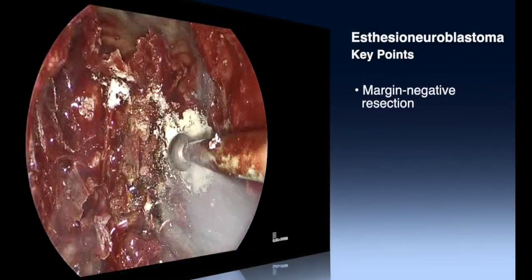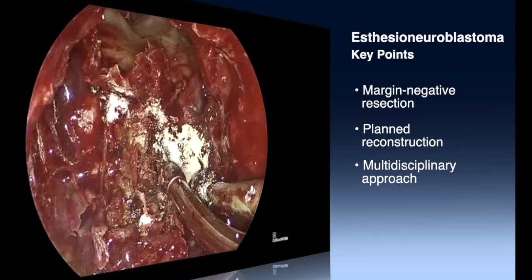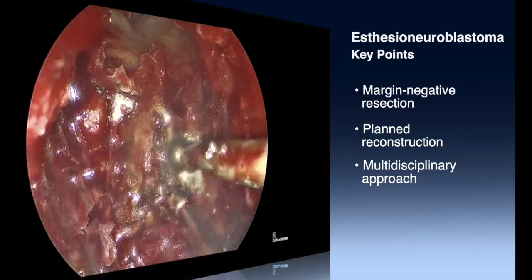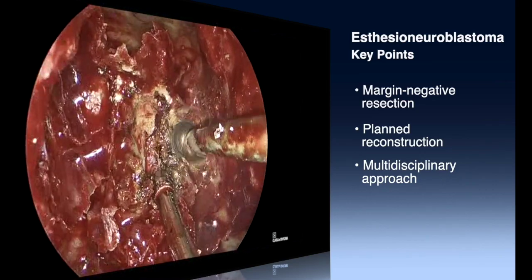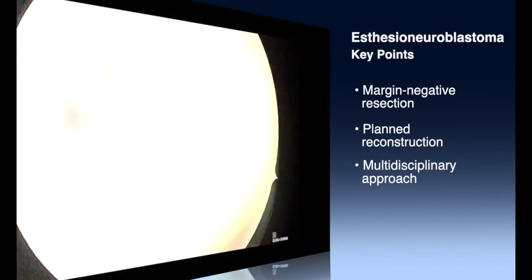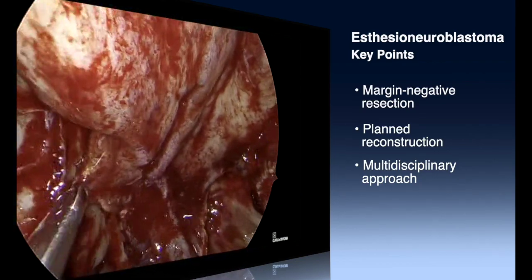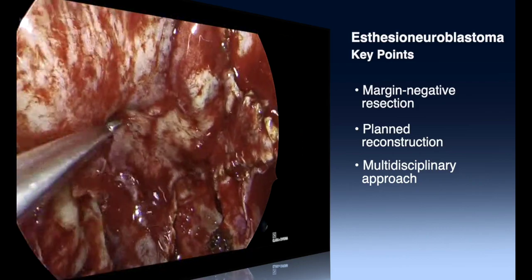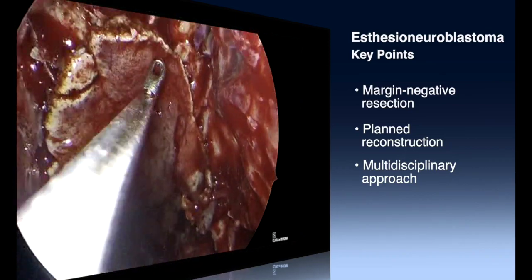The first key point when treating esthesioneuroblastoma is that, just like all sinus malignancies, oncologic principles take precedence — obtaining a negative margin resection is of utmost importance. This can be achieved endonasally or via combined open approaches; whatever the tumor dictates for that particular case is most important. The second key point is planning your reconstruction: if proceeding purely endonasally, you must be assured you have enough material to reconstruct the skull base defect, which may include inlays as well as onlay mucosa when available. Lastly, multidisciplinary team approaches for sinus malignancies are critically important, including neurosurgery, otolaryngology, and post-operative adjuvant radiation therapy and chemotherapy when needed.